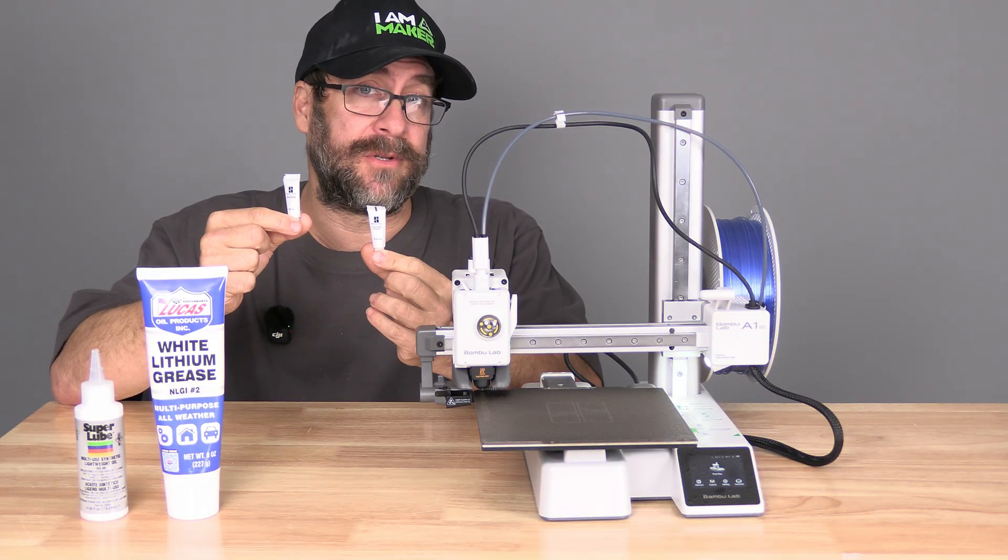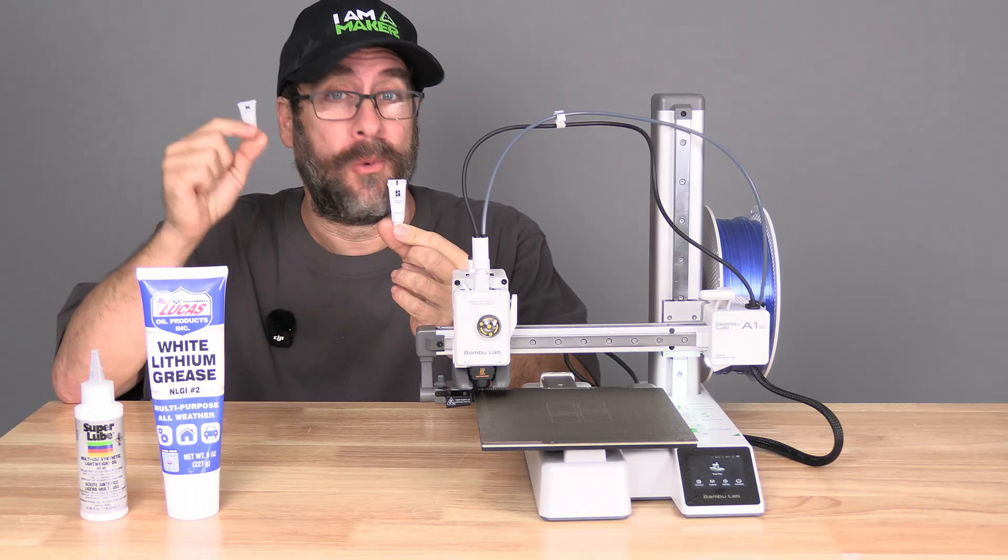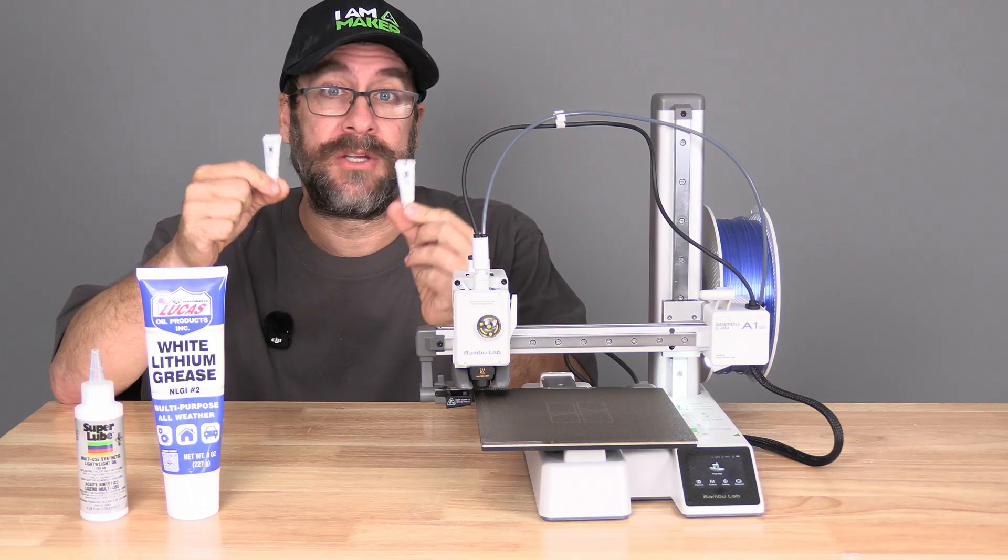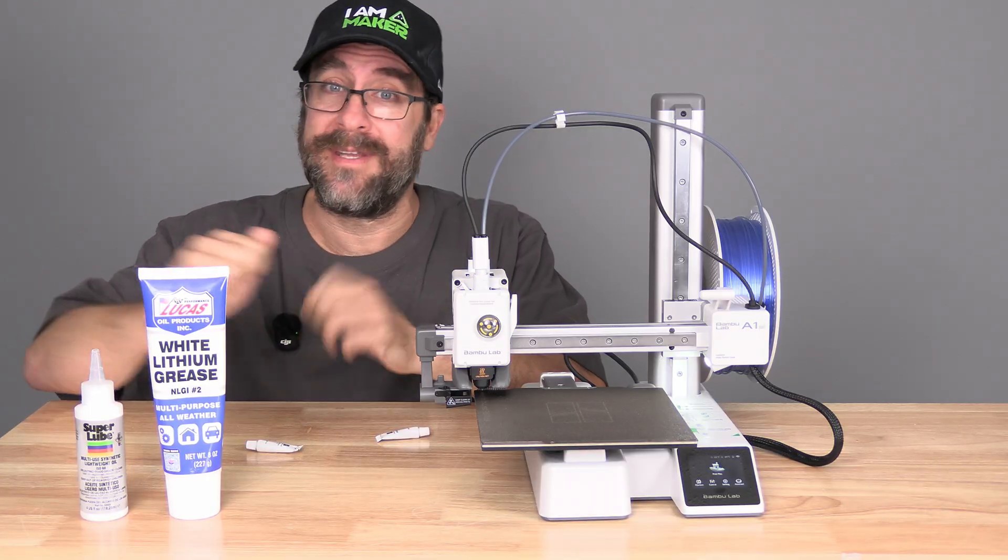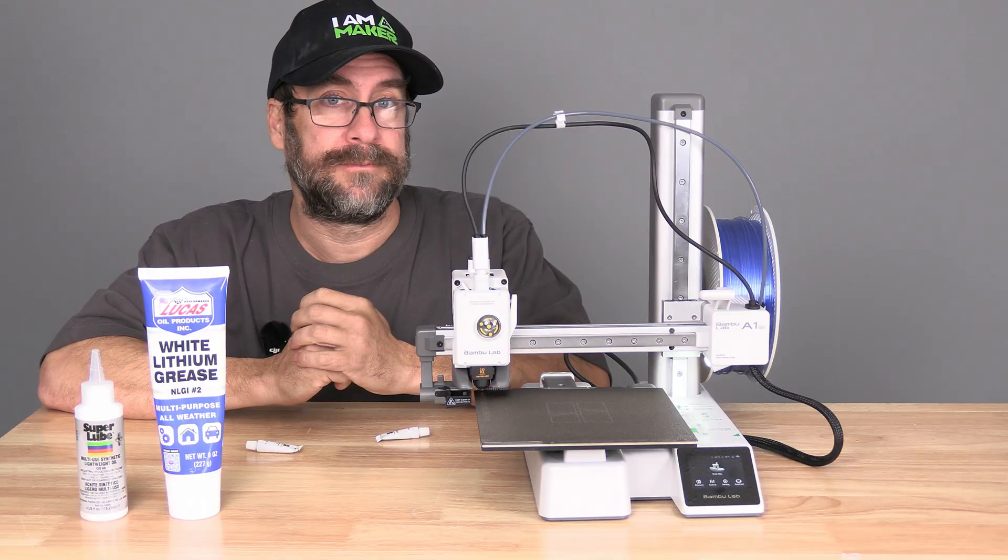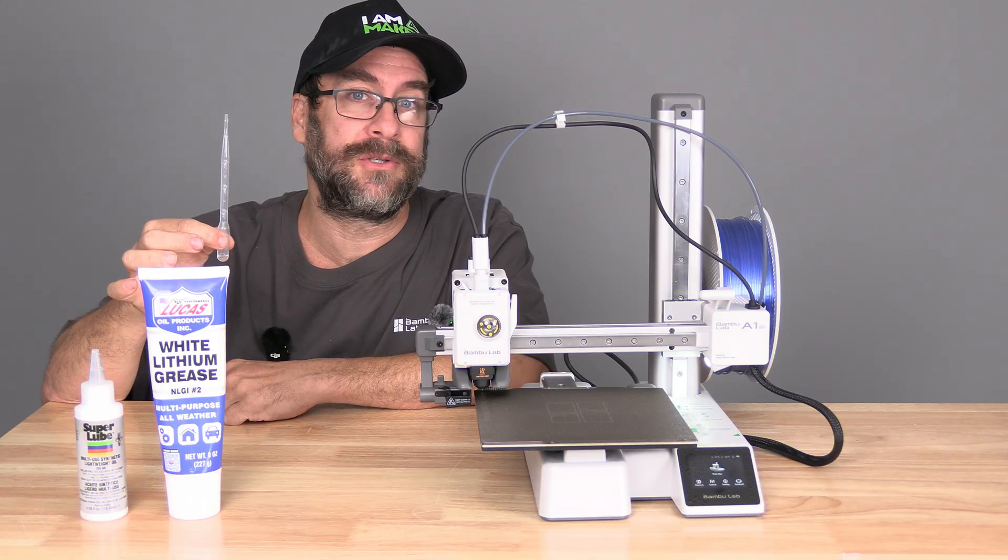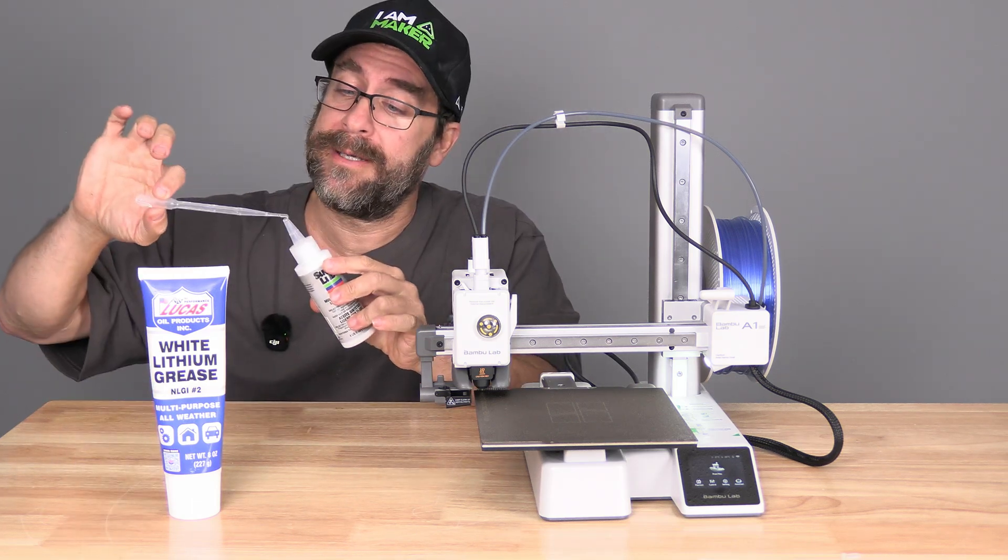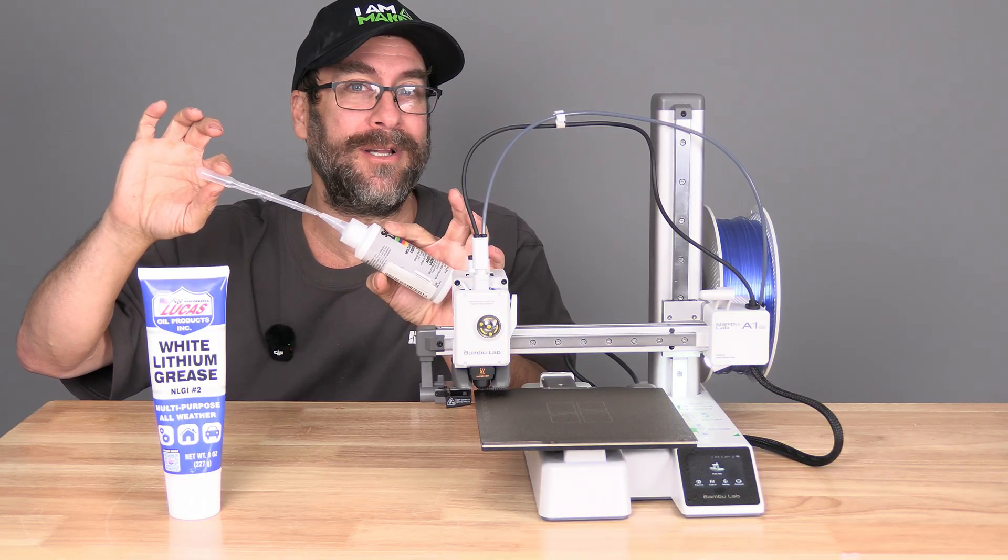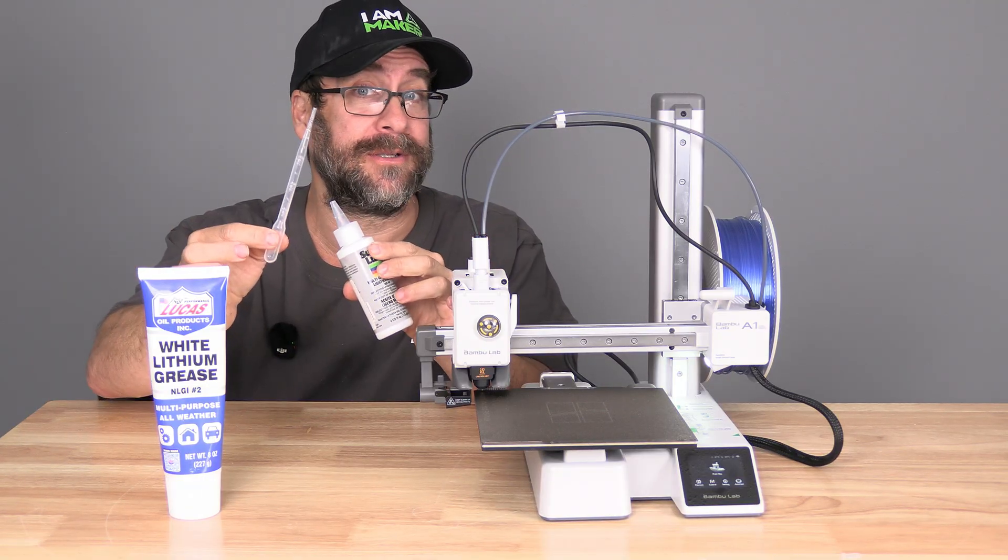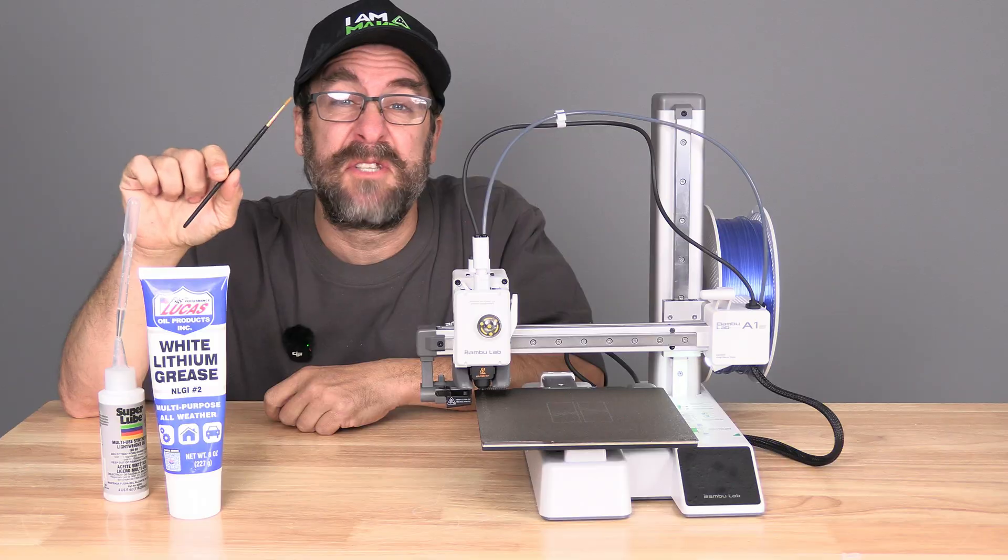It is now time to do the lubrication. Your Bambu Lab A1 came with these two sample products. One is oil. One is grease. You may use these. However, I suggest picking up one of these and one of these and keeping them with your toolkit. I will leave a link in the description. I will also be using a plastic dropper to apply the oil. I will simply insert it into the nozzle of the oil bottle and suck some oil out to apply to the printer using the dropper.